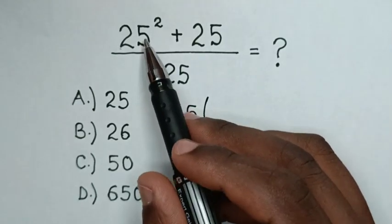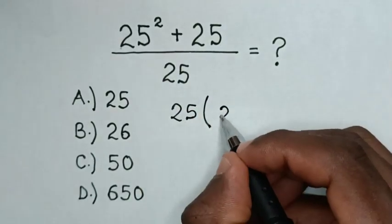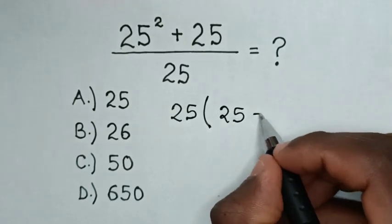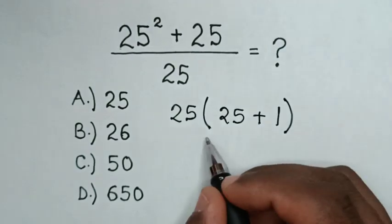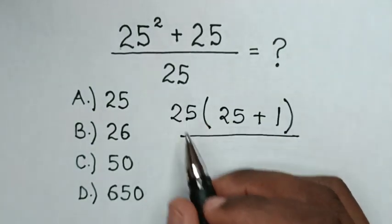Then 25 square divided by 25 is 25. Then, plus 25 divided by 25 is 1. Then bracket over 25.